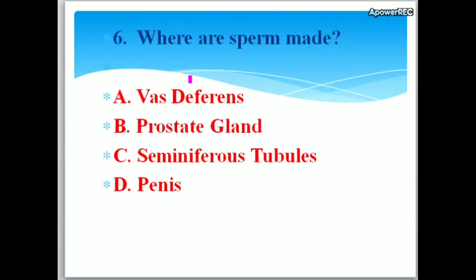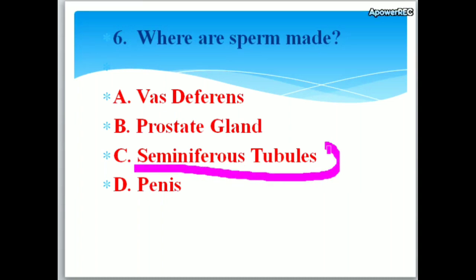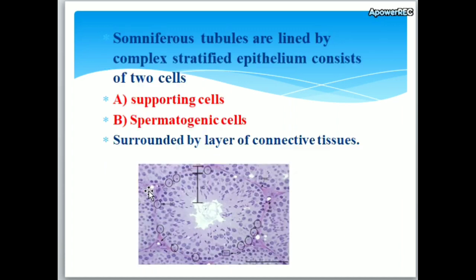Where are sperm made? Options: A. Vas deferens, B. Prostate gland, C. Seminiferous tubules, D. Penis. The correct answer is C, seminiferous tubules.